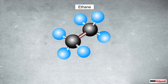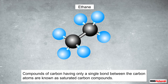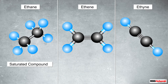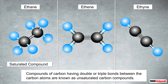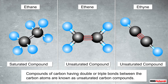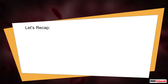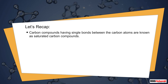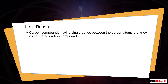So we have just seen that in an ethane molecule the carbon atoms are bonded to each other with a single bond. Such compounds of carbon that have only single bonds between the carbon atoms are called saturated carbon compounds. In contrast, in ethene and ethyne molecules the carbon atoms are bonded to each other with double and triple bonds respectively. Such carbon compounds that have double or triple bonds between the carbon atoms are called unsaturated carbon compounds.